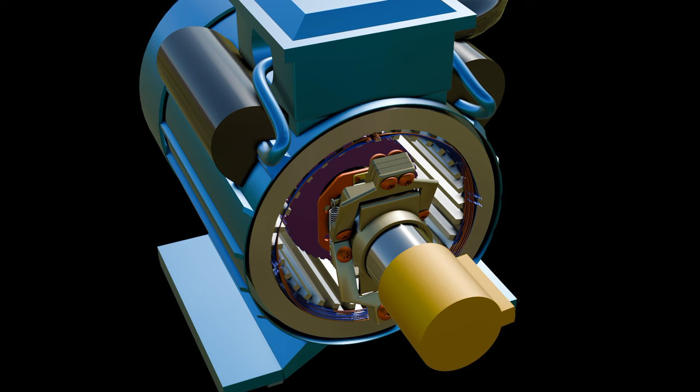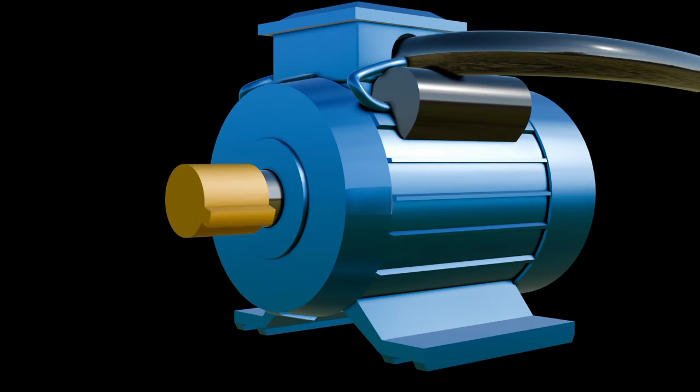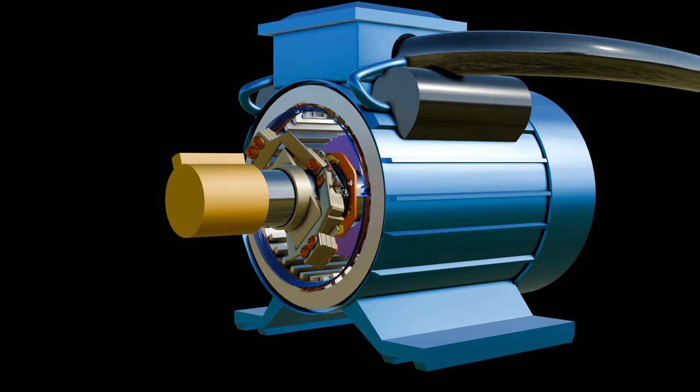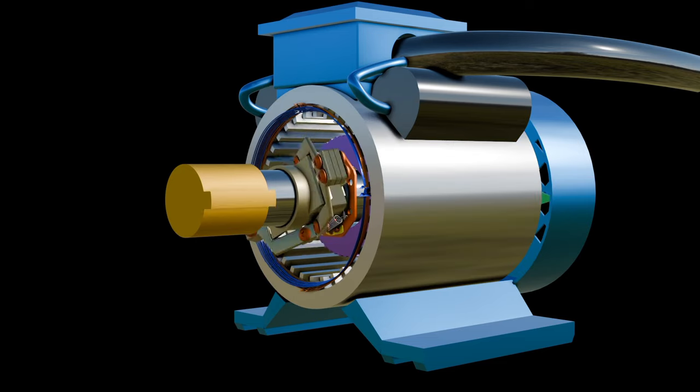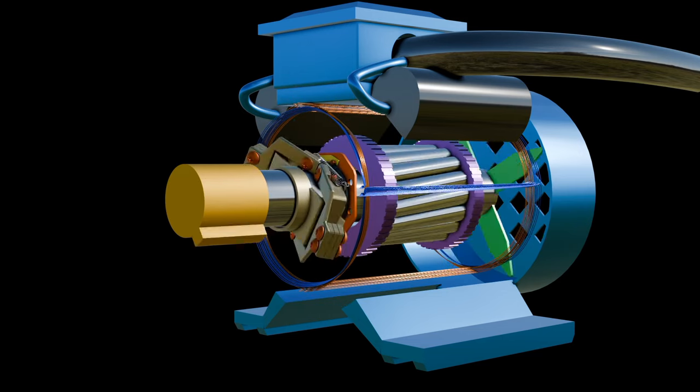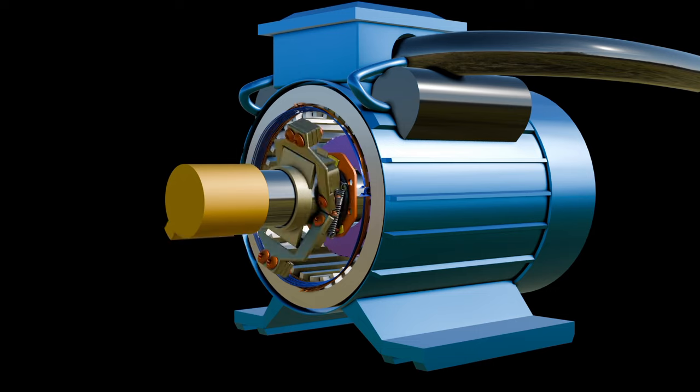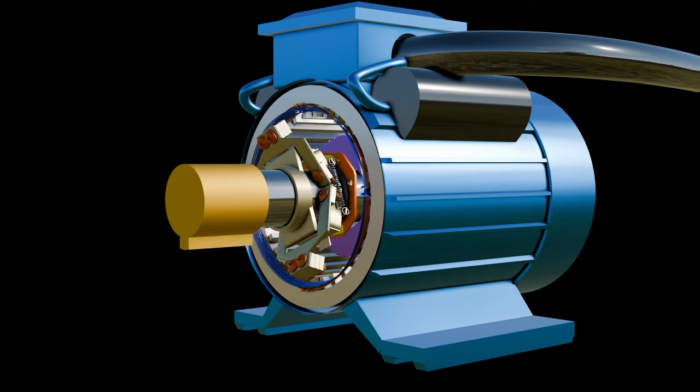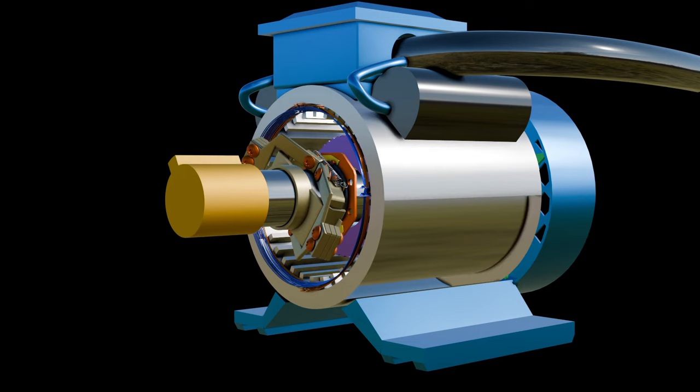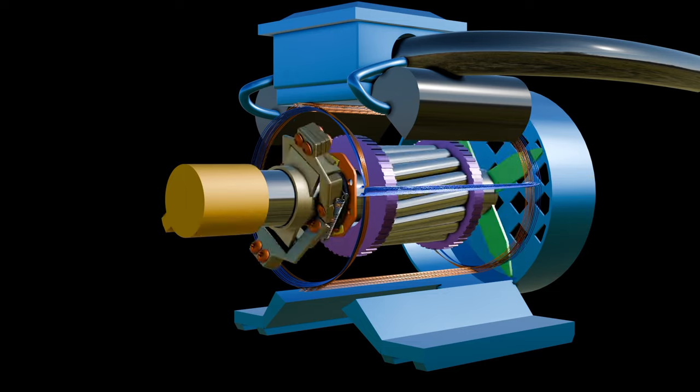During running conditions, both running winding and auxiliary are connected with motor. The starting torque and efficiency of this motor is very high. Therefore, this can be used in the applications where high starting torque is required like a refrigerator, air conditioner, ceiling fan, compressors, and the rest.